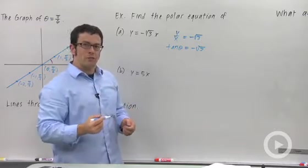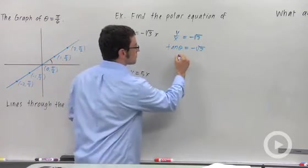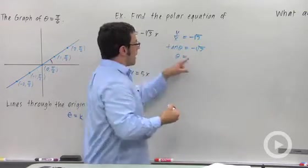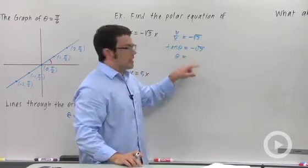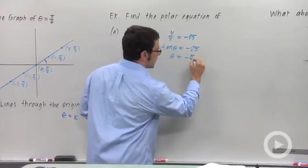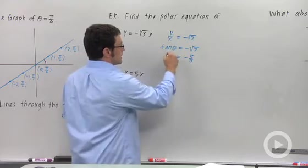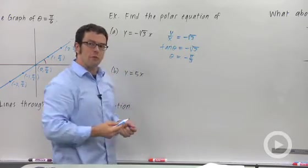So what we have to do is figure out what theta equals. So what angle has a tangent of negative root 3? Well it's negative pi over 3. So theta equals negative pi over 3 is the same as the line y equals negative root 3x.